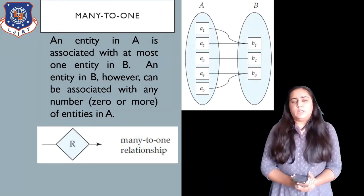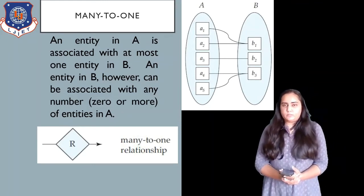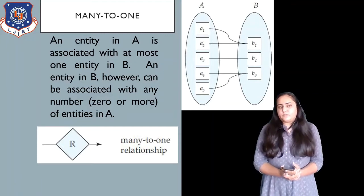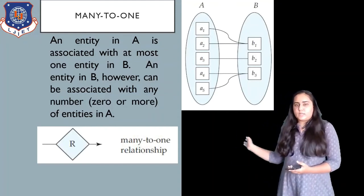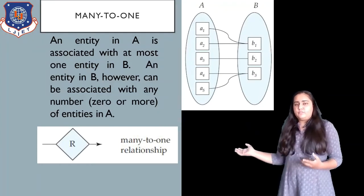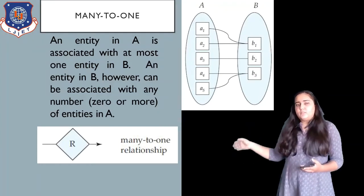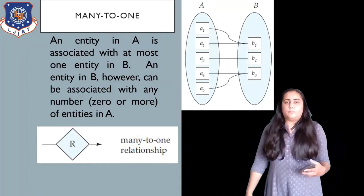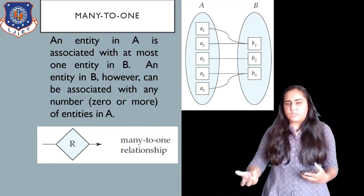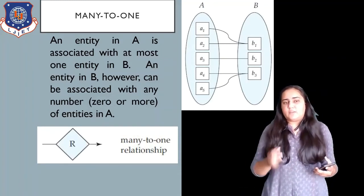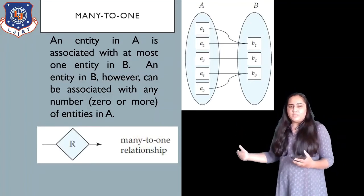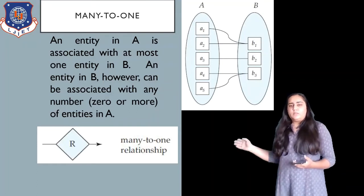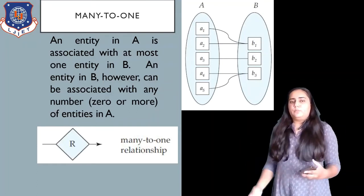Notice that one-to-many and many-to-one are similar, just opposite of each other — it depends on which direction you look from. If you're looking from A to B, then it's a many-to-one relationship, but if you're looking from B to A, then it's a one-to-many relationship. Whichever side the 'one' part of the relationship comes from should have an arrow. Because it's many-to-one, the arrow is on the right-hand side. If it's one-to-many, the arrow would be on the left side.